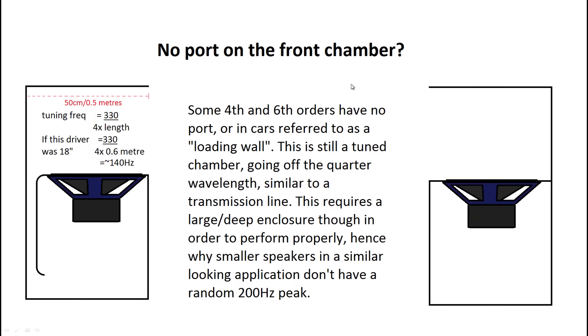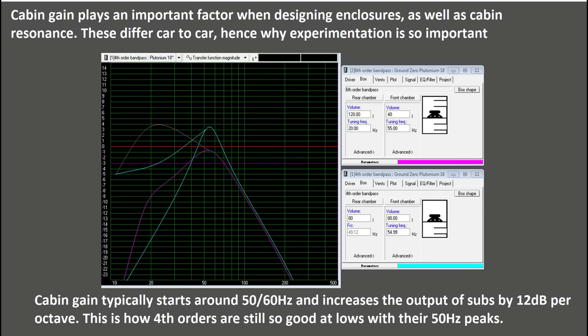Another thing you might see is there being no port on the front of fourth and sixth orders in some deep enclosures. For example a deep enclosure would actually tune to about 140 hertz which is low enough to be useful as a high frequency port. As you can see 140 hertz is good and 50 is about ideal for most builds. Another thing is cabin gain improves your output from about 50 or 60 hertz down.